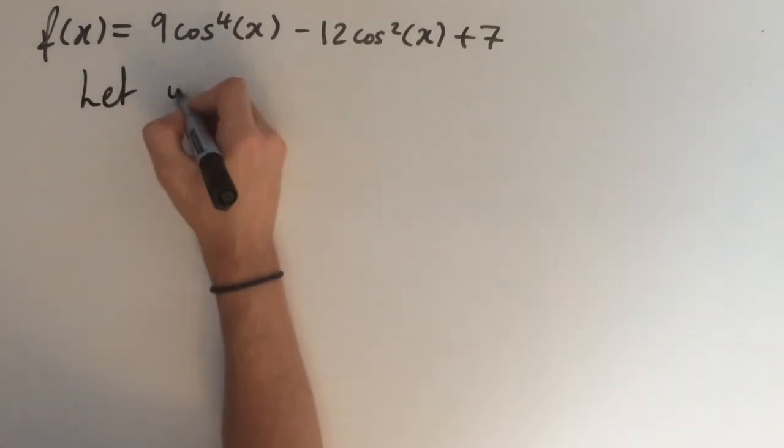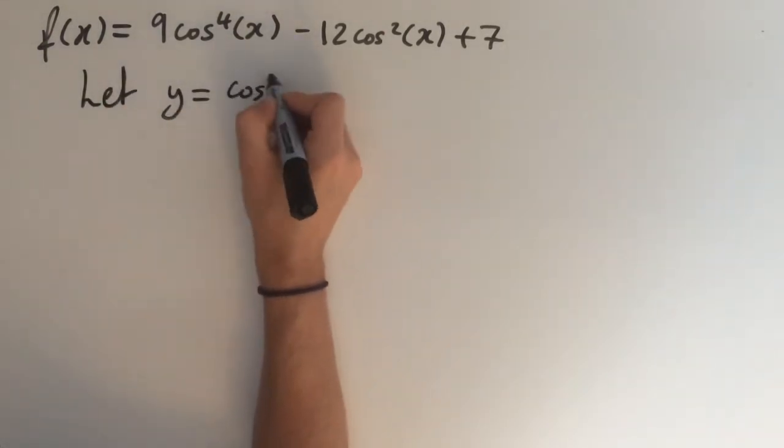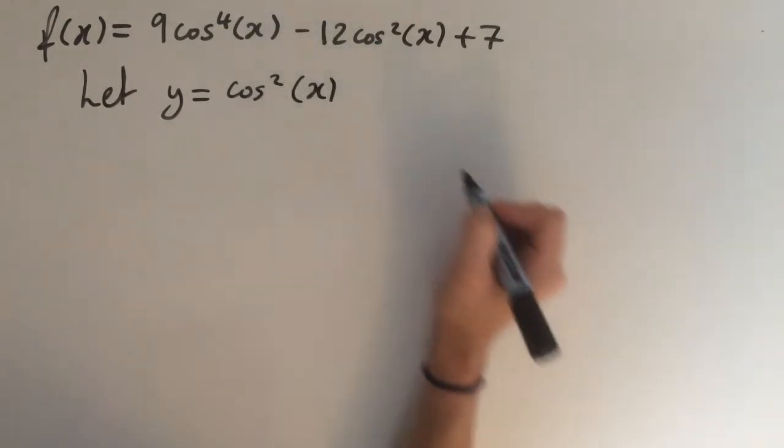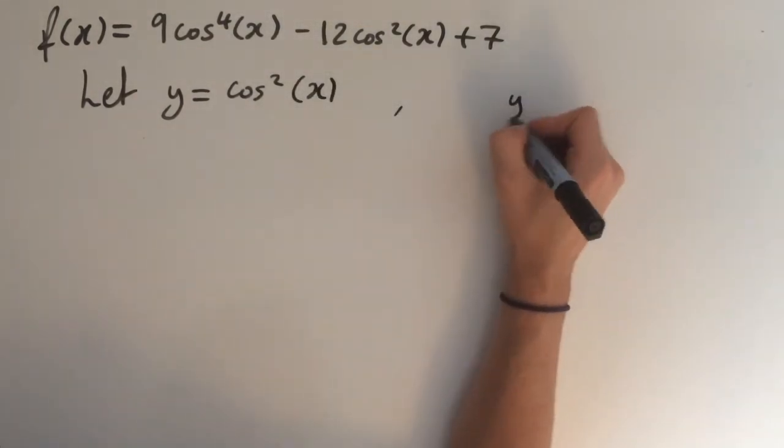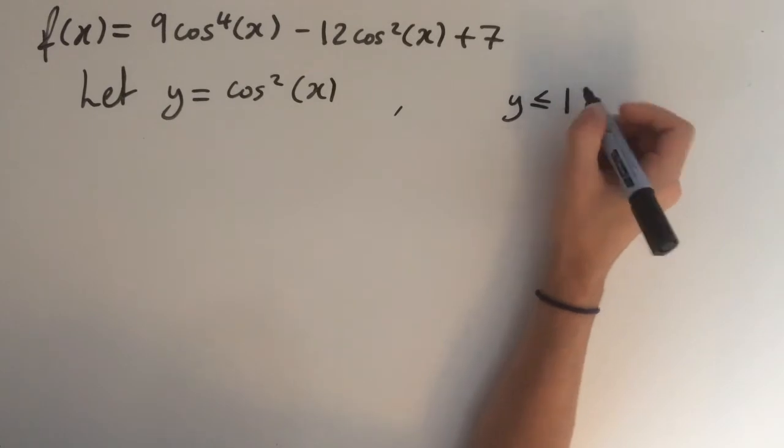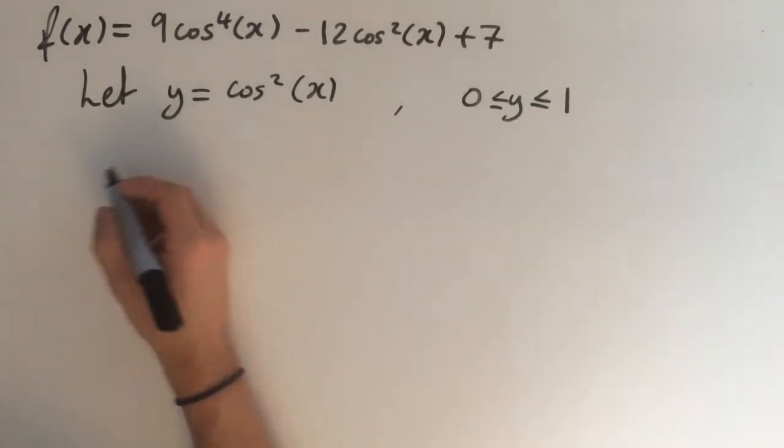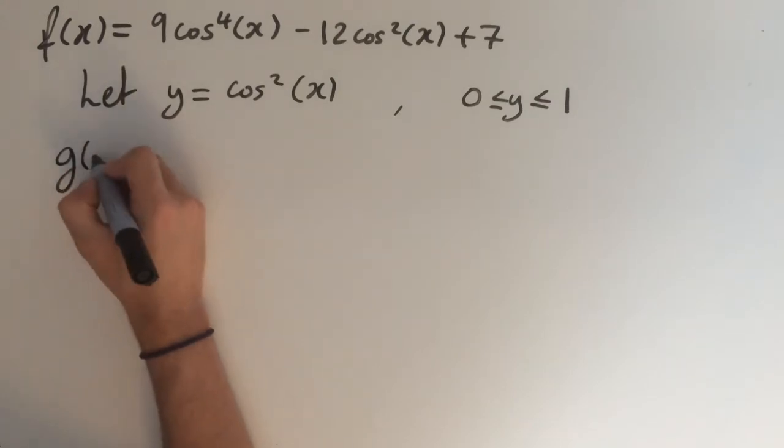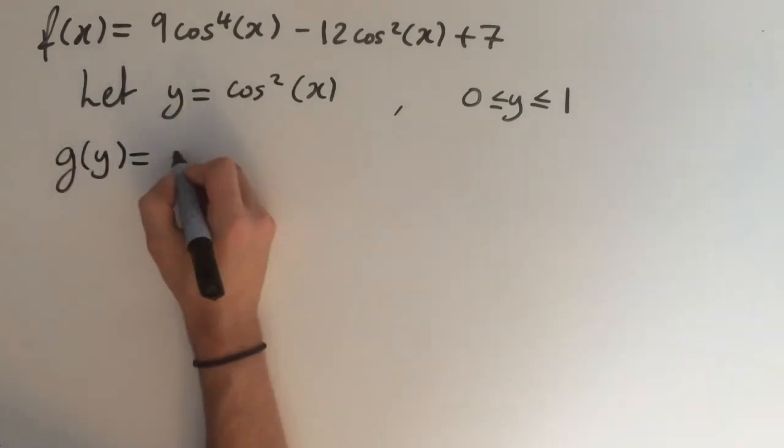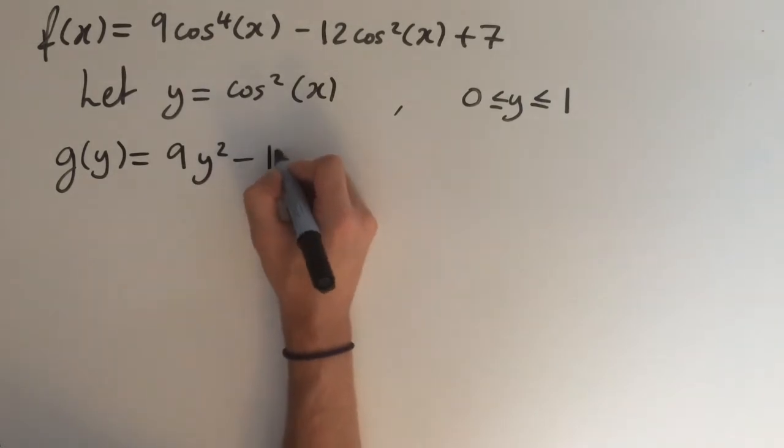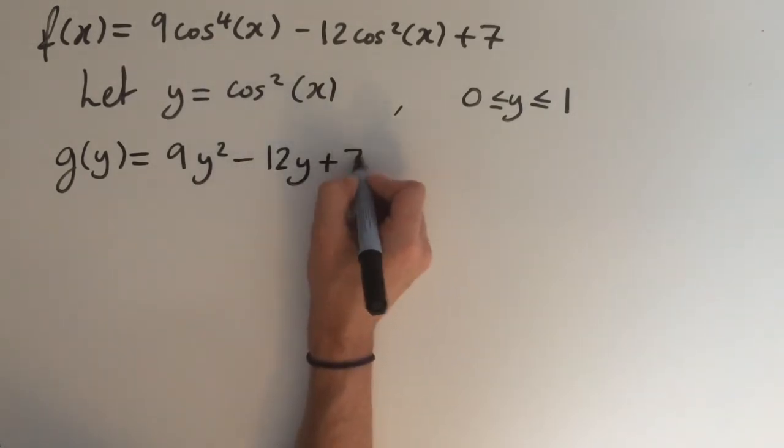We're going to let y equal cosine squared of x. Keep in mind that the values of y always lie in the range between 0 and 1. If we use this substitution, we're going to get a new function. Let's call it g of y. And this equals 9 y squared minus 12 y plus 7.